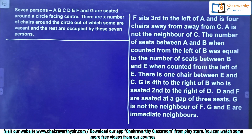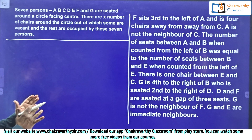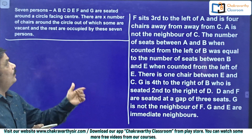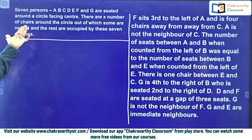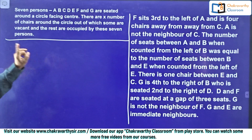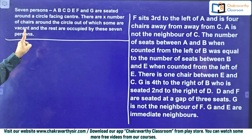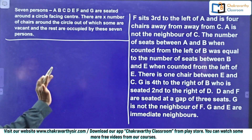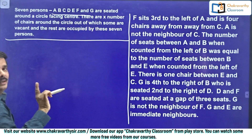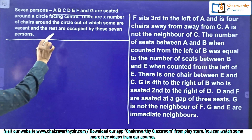Now, come back to this question. How to solve this one? What should be the approach? First, you need to read the basic information. What's the basic information given? Seven persons, A to G, are seated around a circle facing the center — very important. Number of persons: seven. All are facing center.